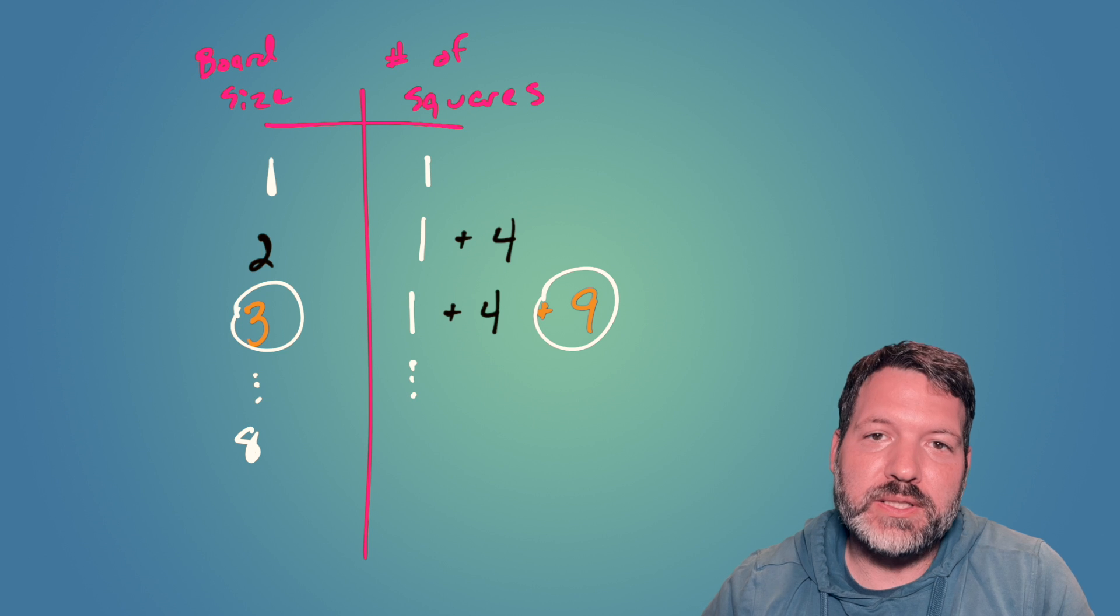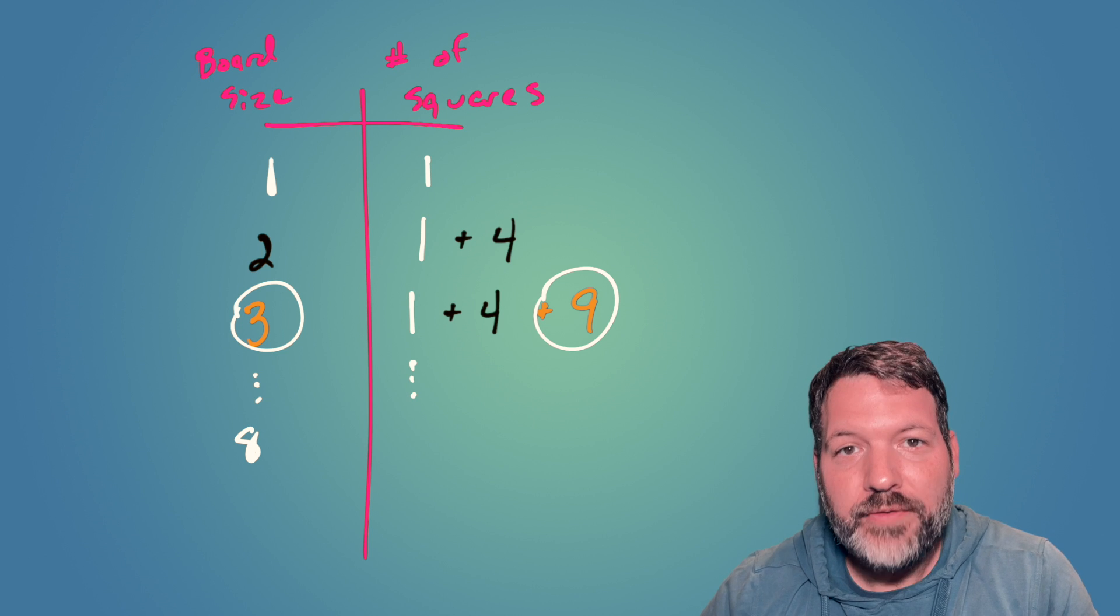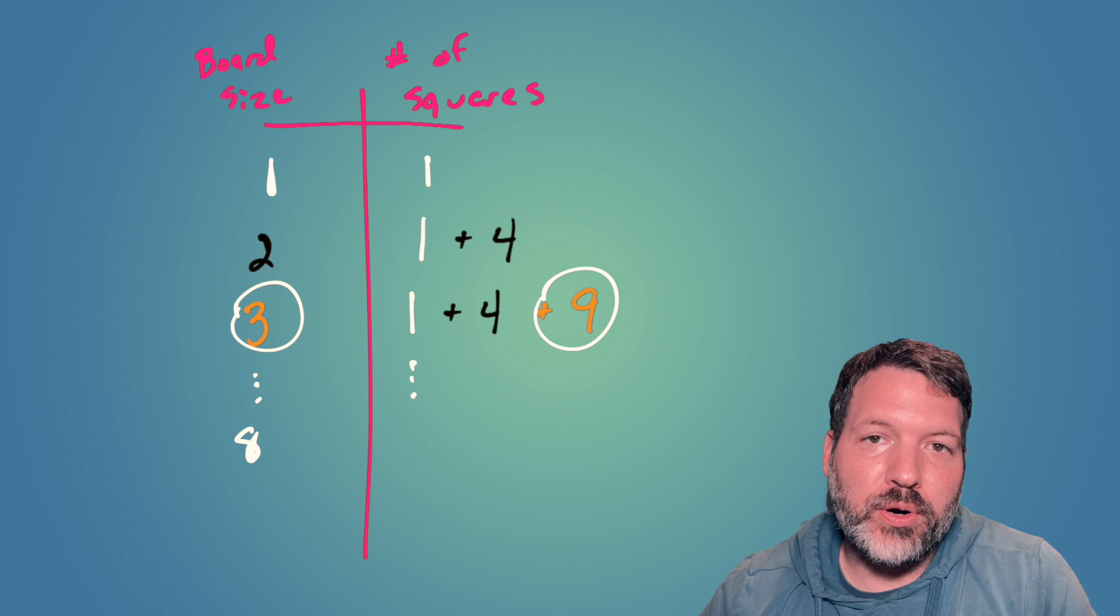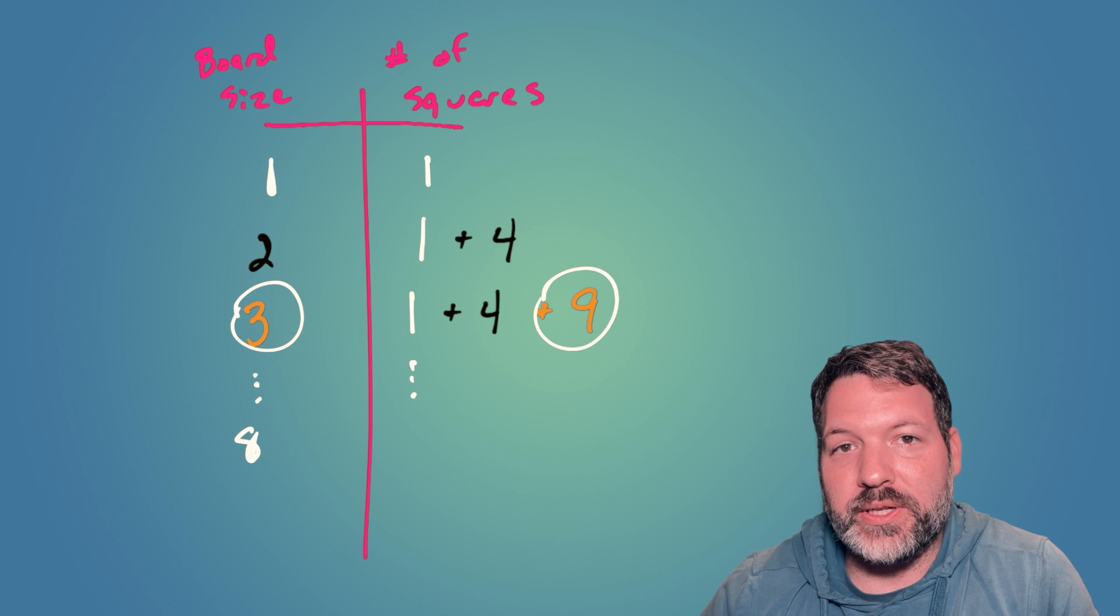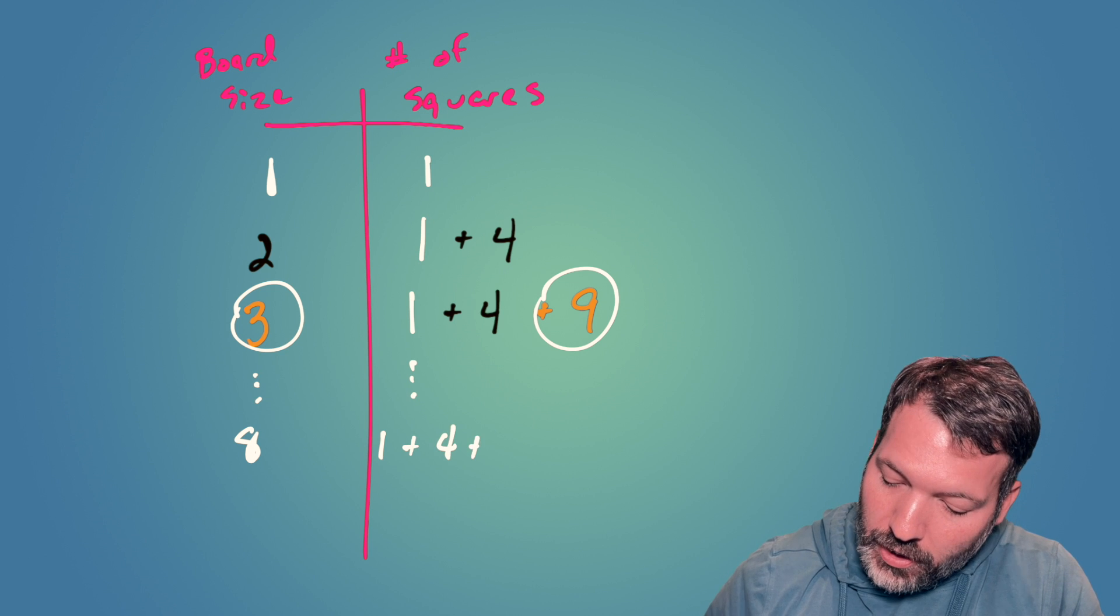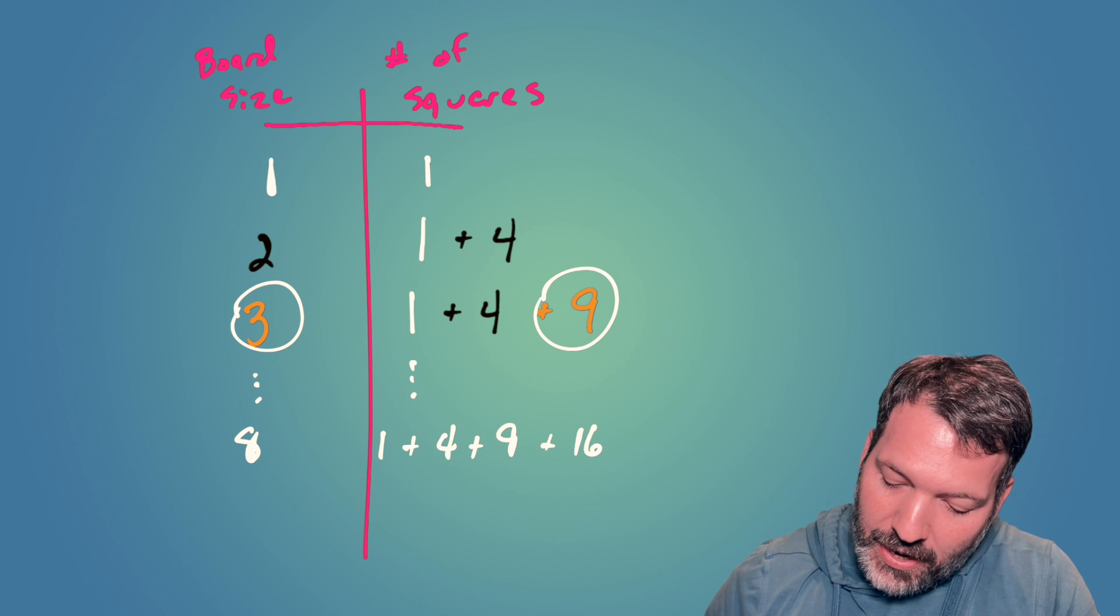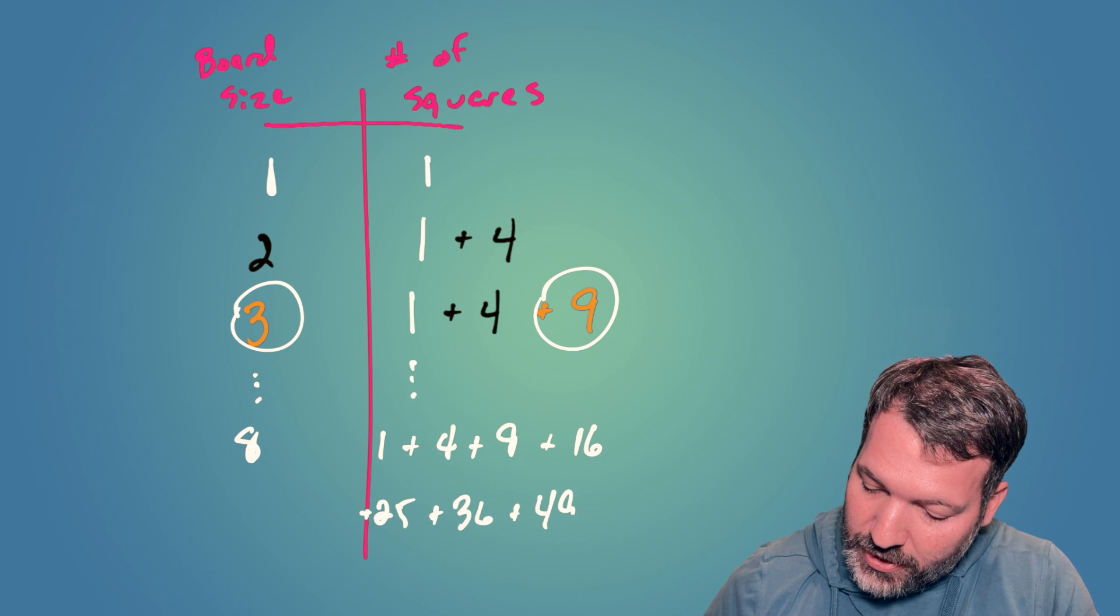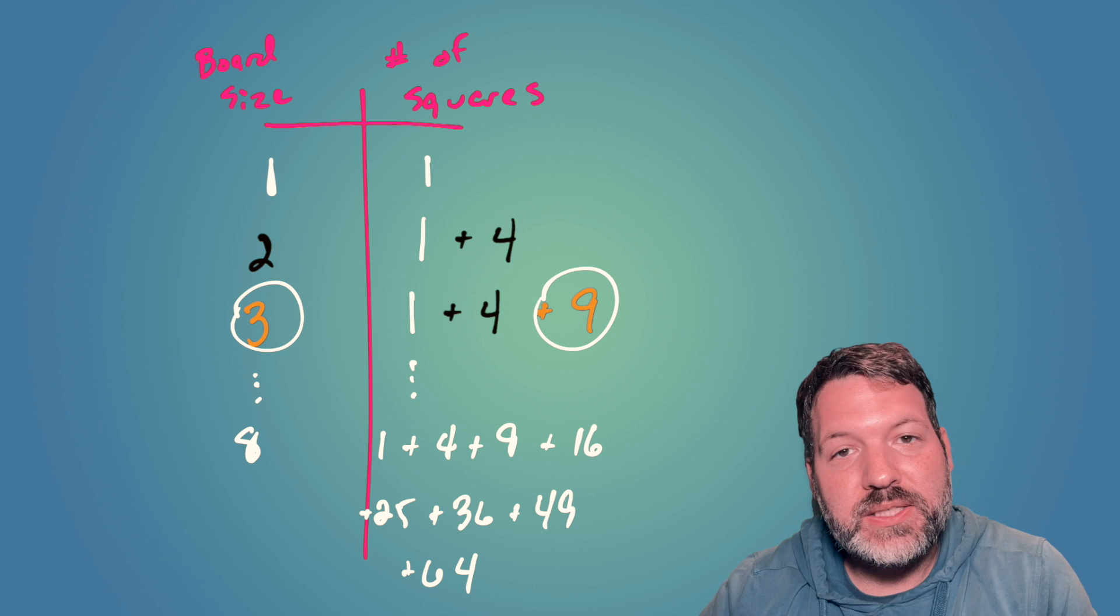For an 8x8 chessboard, what we really need to do is add up all the perfect squares up to 8 squared itself, 64. So that's going to be 1 plus 4 plus 9 plus 16 plus 25 plus 36 plus 49 plus 64 itself.